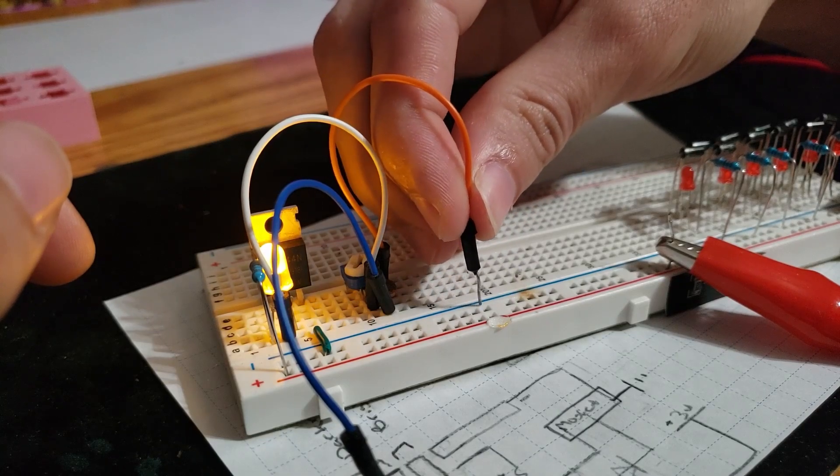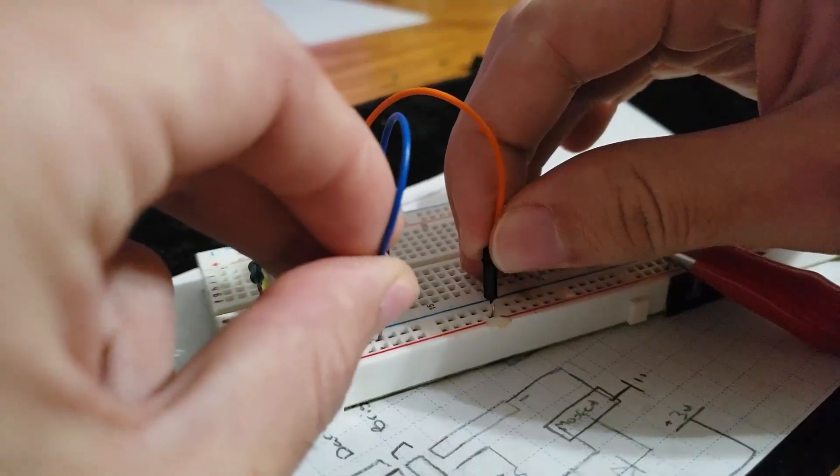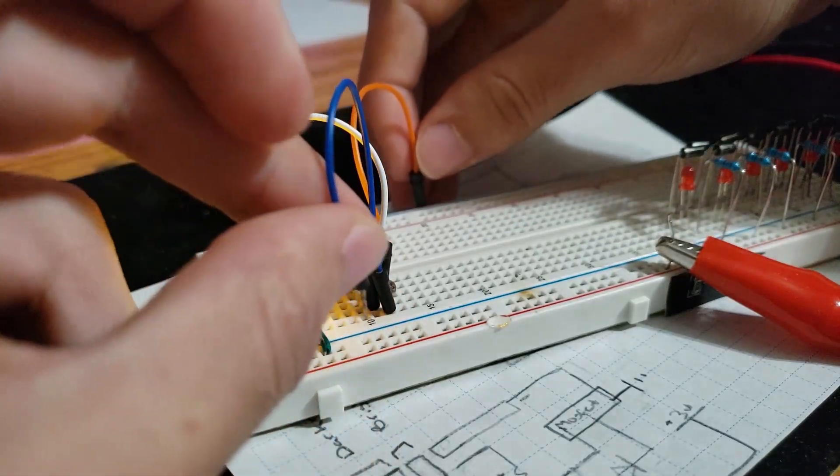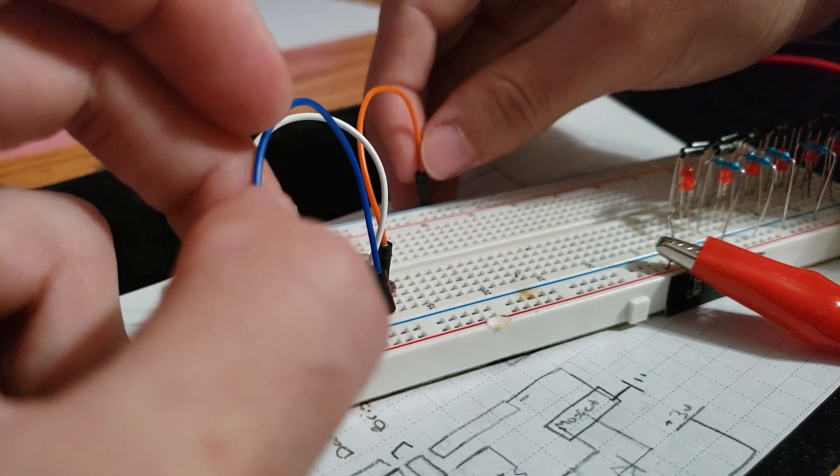Now if I connect either lead to ground, you see it'll turn off. Doing the blue wire now, you see it turns off.